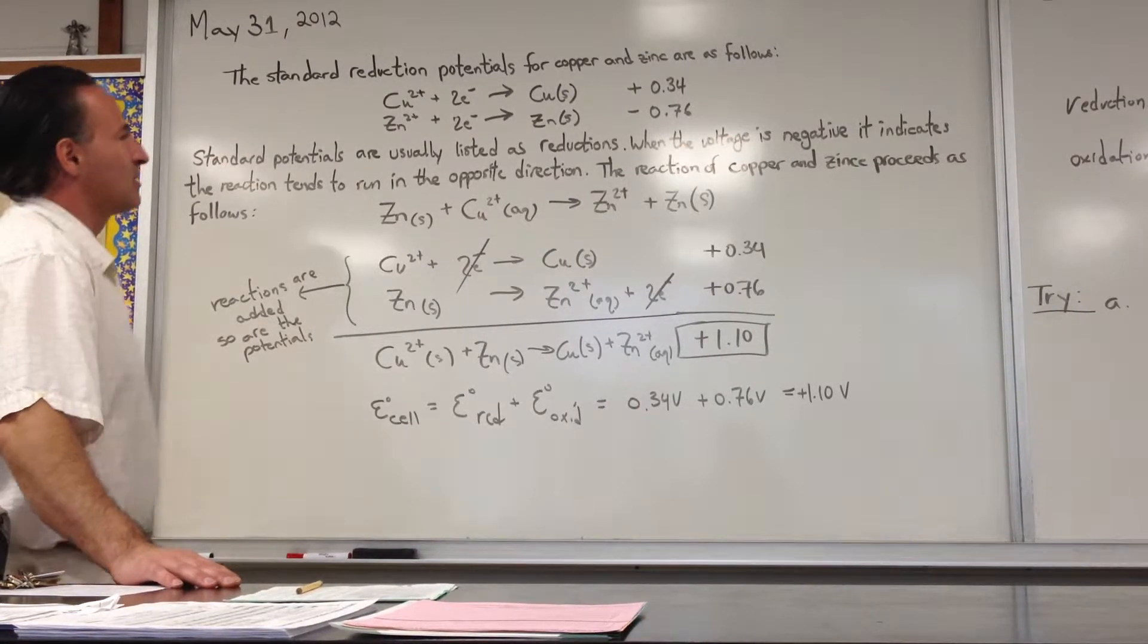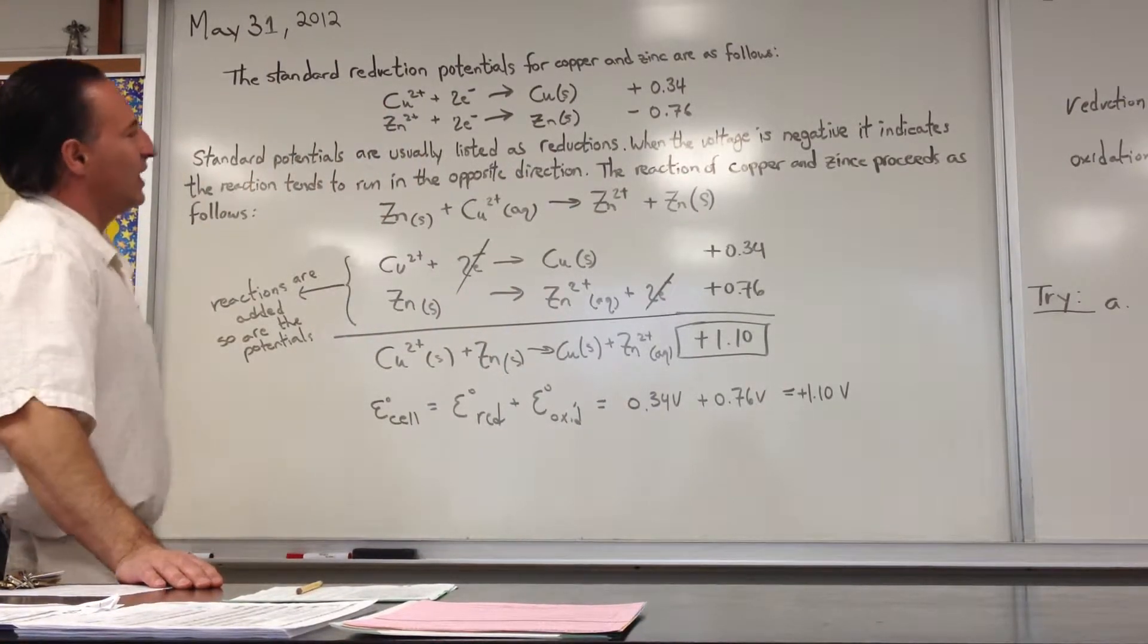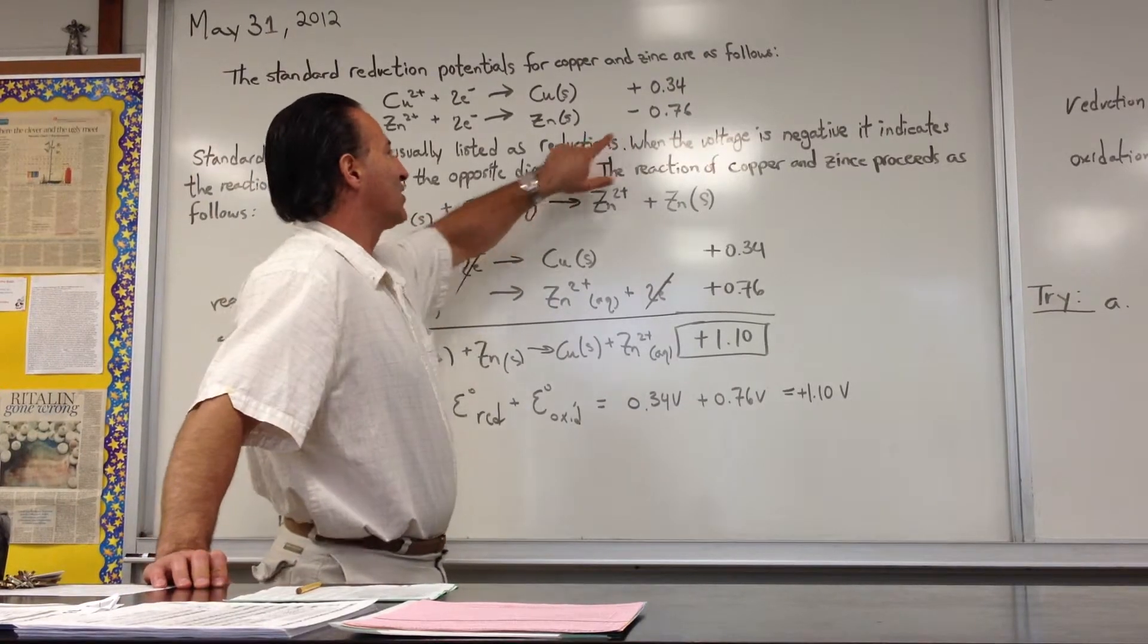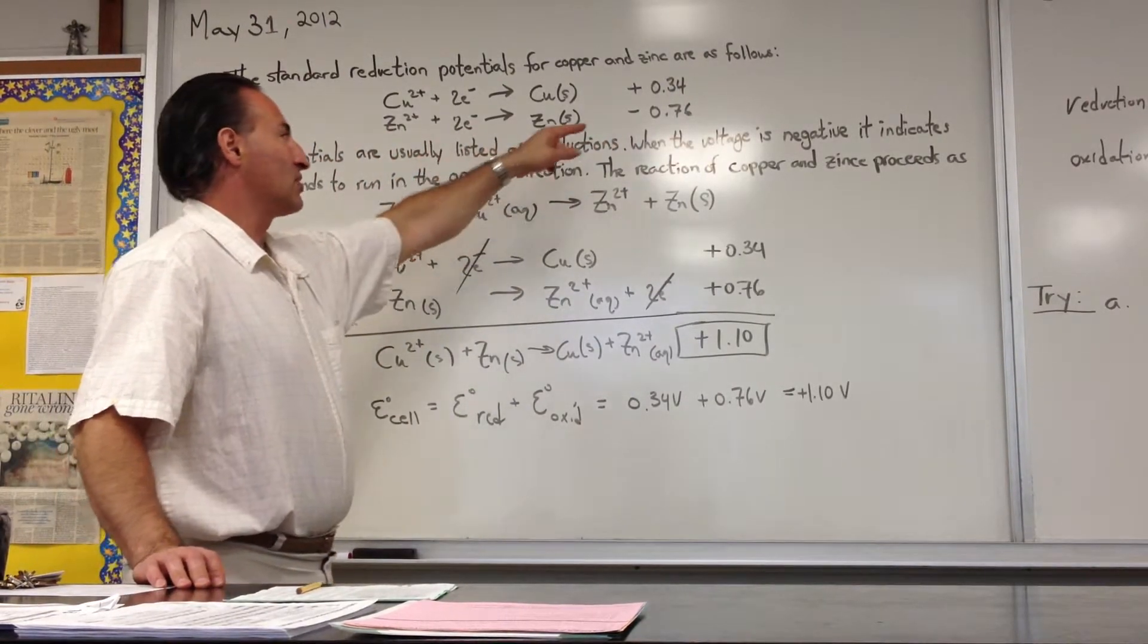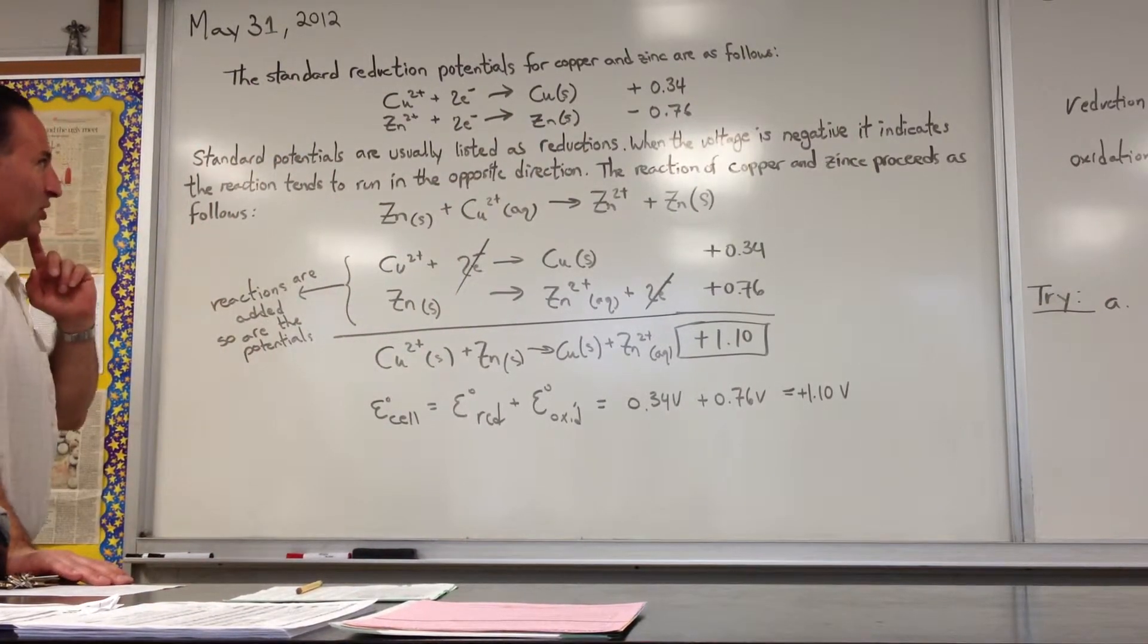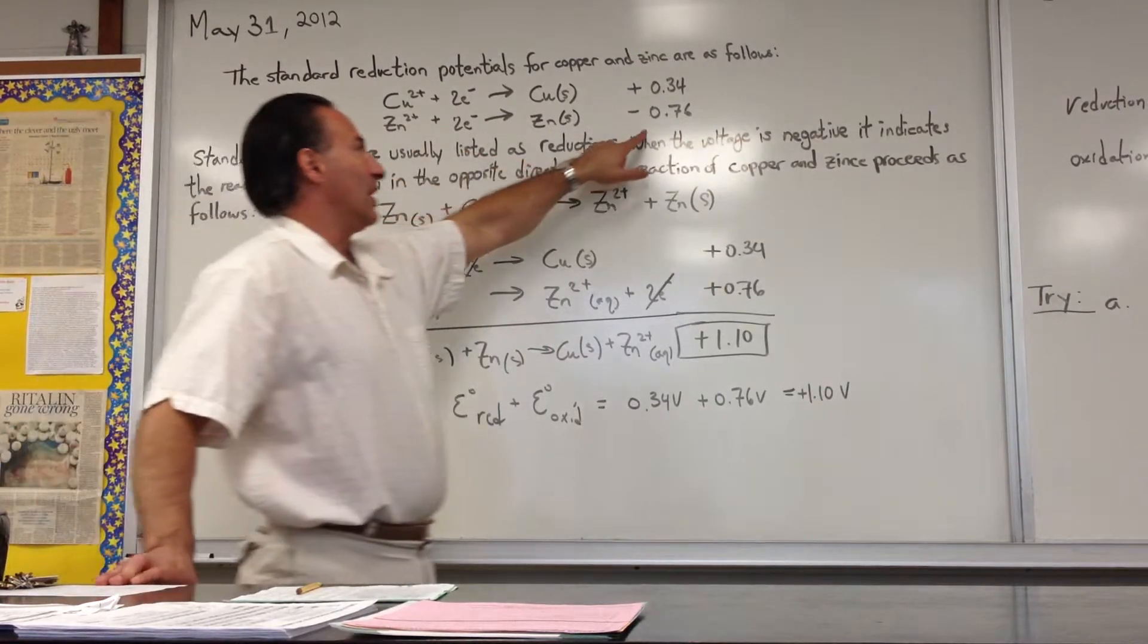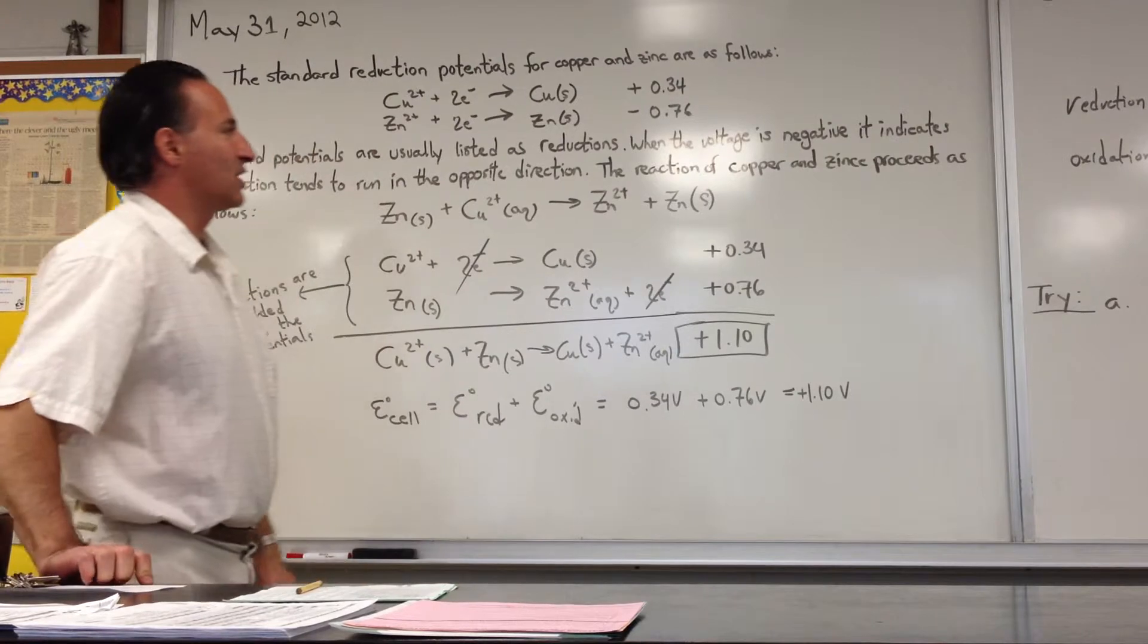And they list the voltage alongside it. Typically when the voltage is negative, it would mean that the reaction tends to run the other way. So you would write it backwards, put the electrons on the other side, and then reverse the opposite voltage. So if you wrote this reaction backwards, you would put it as an oxidation, and then it would have a positive 0.76 voltage.